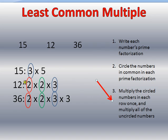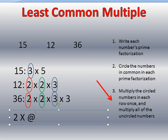Well, now I multiply the circled numbers in each row once, and then I multiply all of the uncircled numbers as well. So I need to write myself a multiplication sentence. So I'm going to start with my red number 2s. I only use it once. I'm going to multiply it by the green 2. And then the other circled numbers I have is 3.